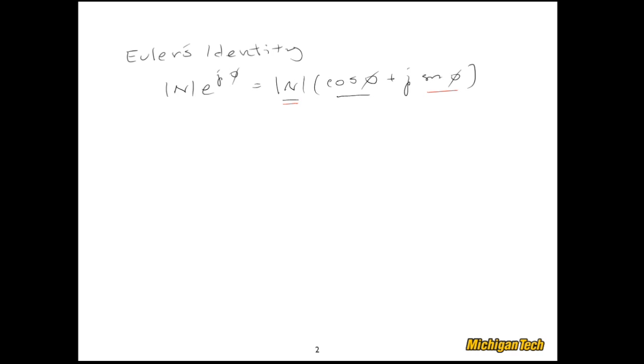A couple useful results that pop out of Euler's identity, and these are extremely useful, are that sine phi is equal to e to the j phi minus e to the negative j phi divided by 2j, and cosine phi is similar but a little bit different. The denominator is just 2, not 2j, and the sign is plus instead of minus.